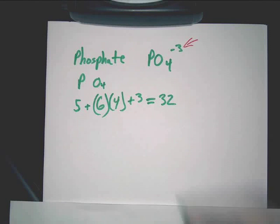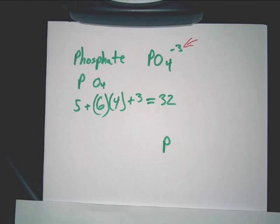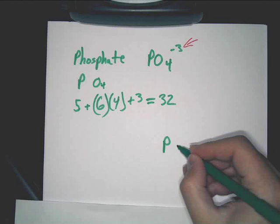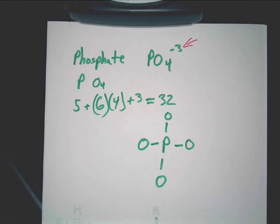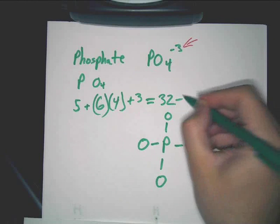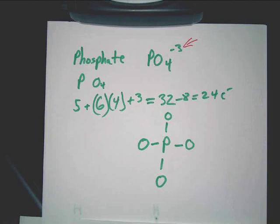Now, next step. We're going to draw our skeleton structure. So, P is going to go in the middle, right? You got one P, you got four O's. So, you go one, two, three, four. Now, remember what we do. Each line that we draw counts as two electrons. Each line counts as two electrons. So, how many electrons did I just put in this diagram? Eight. Eight, so subtract eight. So, we're left with 24 electrons that we can add.